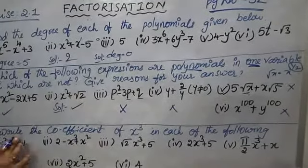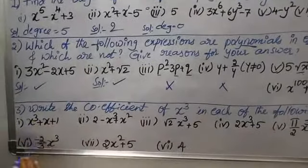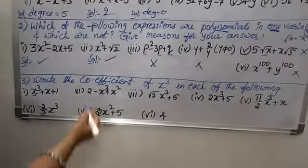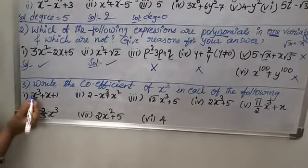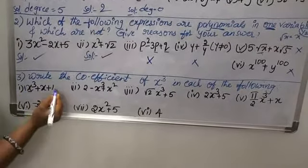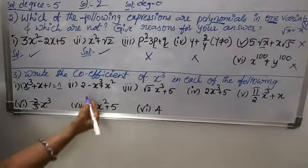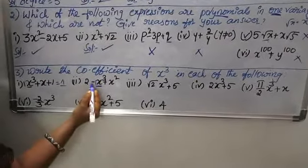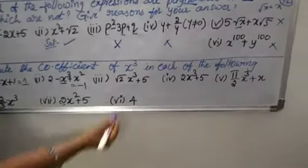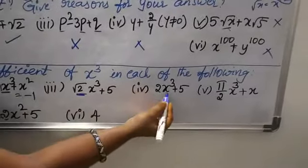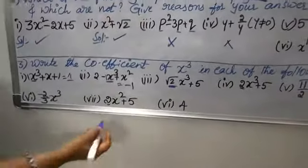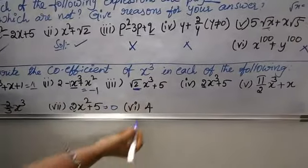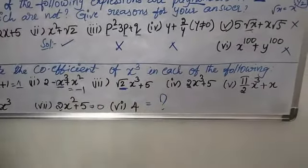Now write the coefficient of x³ in each of the following. In the first one, there is no explicit value in front of x³, so we write 1 — coefficient of x³ is 1. In the second one, x³ has a minus sign in front, so coefficient is −1. In the third, coefficient is √2. In the fourth, coefficient is 2. In the fifth, observe — there is no x³ term, so the coefficient is 0. The last one — find that answer yourself.